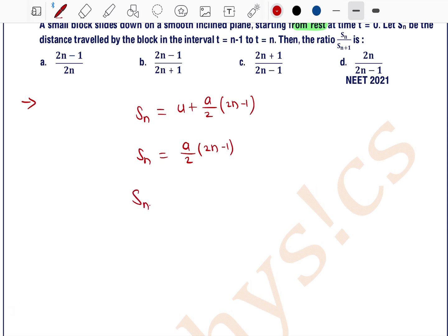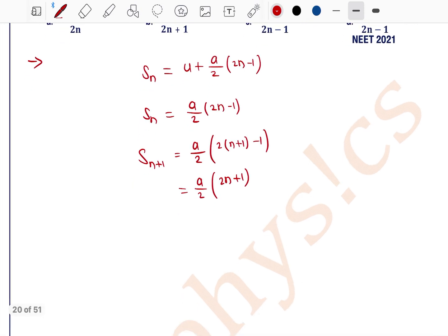Now the ratio Sn by Sn plus 1: we can write Sn equals a by 2 into 2n minus 1, and Sn plus 1, replacing n by n plus 1, that is 2 into n plus 1 minus 1, which equals a by 2 into 2n plus 1. So the ratio Sn divided by Sn plus 1 equals a by 2 into 2n minus 1 divided by a by 2 into 2n plus 1. The a by 2 terms cancel out, leaving 2n minus 1 by 2n plus 1.